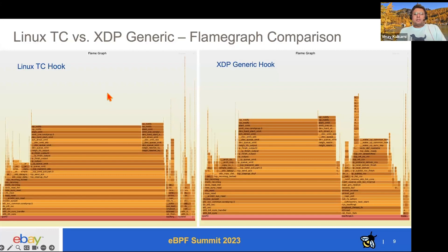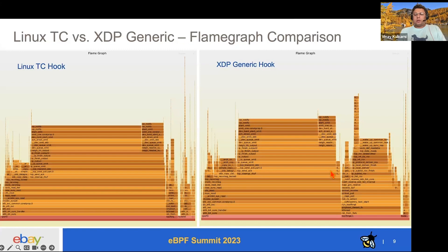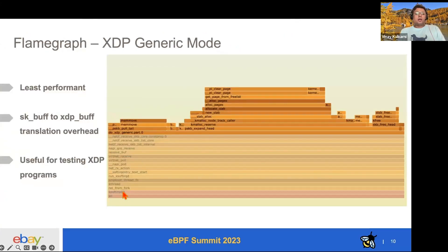Looking at the flame graphs, the difference jumps out at you. The left-hand side is pretty similar, but the right-hand side shows noticeably different towers in the skyline. Zooming in, you can see the Ksoft IRQ — the interrupt handler receiving packets — is much larger in the XDP generic case. Looking at the do_xdp path, you see the IRQ sending the packet up, the receive, GRO receive, SKB allocation, and then do_xdp_generic_rcv — followed by pull_tail, mem_move, malloc, new_slab, and slab_free. This memory allocation overhead is likely where the performance hit is coming from. There is a certain overhead to using XDP in generic mode.